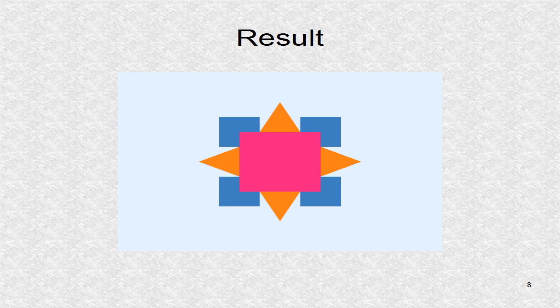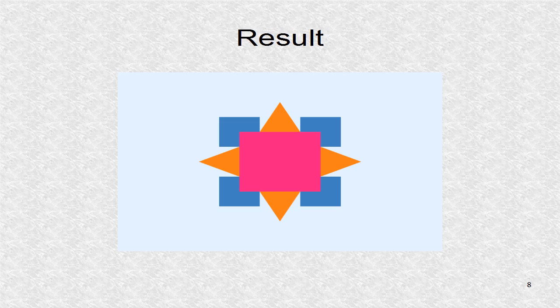This is the result. The square has a reddish color. The four points have a bluish color. The four orange triangles point away from the square.